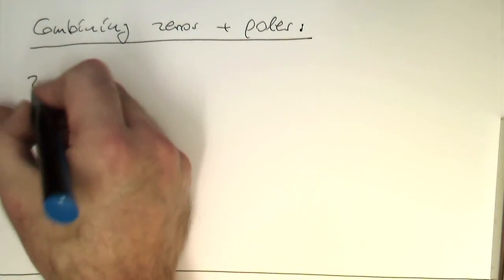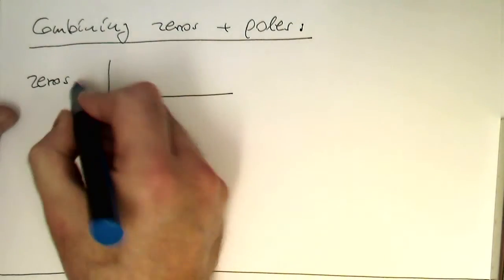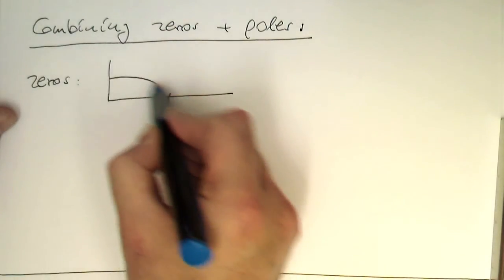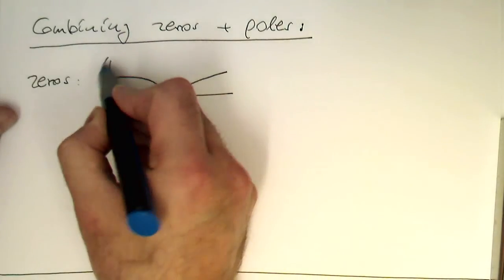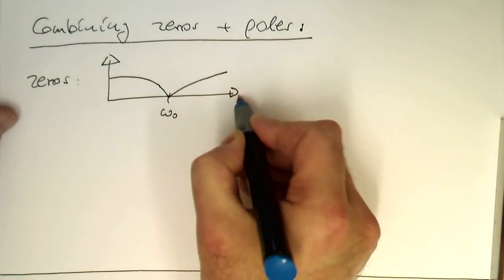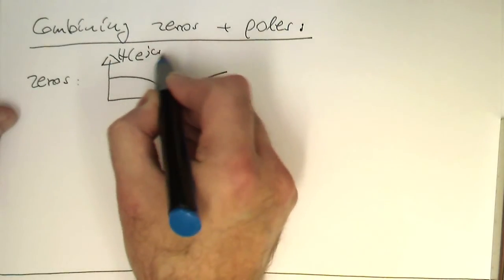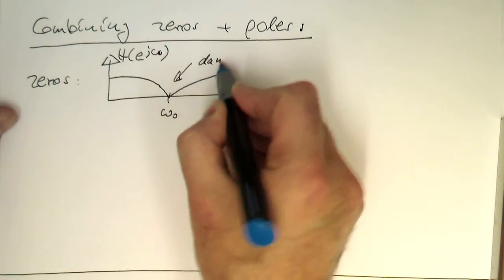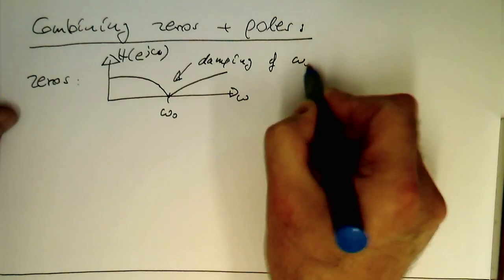Remember the zeros. What they do is, so we've got this omega zero here, that they are creating a very shallow dip in the frequency response here. So that's our omega, and this was our e to j omega. So they are creating a damping. Damping of omega zero.